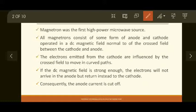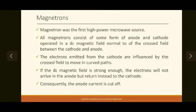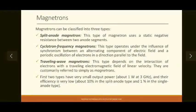By making the magnetic field greater than the radial electric field, the anode current will be cut off because electrons won't reach the anode. And because of that, we will achieve oscillations of electrons around the cathode.